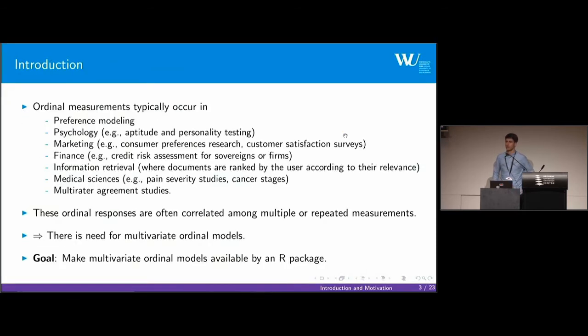The analysis of ordinal outcomes is an important task in various fields of research. For example, ordinal measurements often occur in preference modeling where scales from poor to good are used, or in psychology and marketing such as customer satisfaction surveys, in finance where credit risk assessments of sovereigns or firms is done by credit ratings on an ordinal scale.